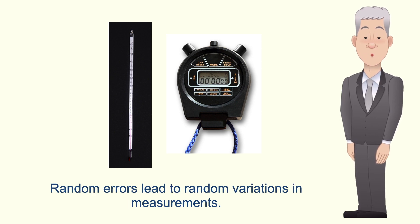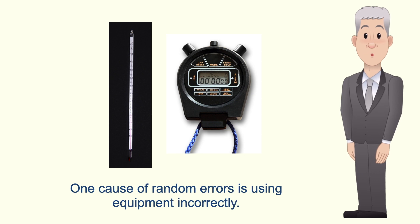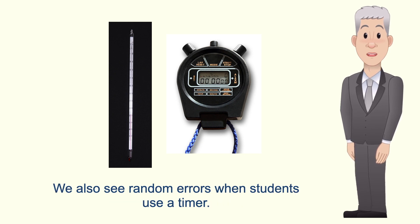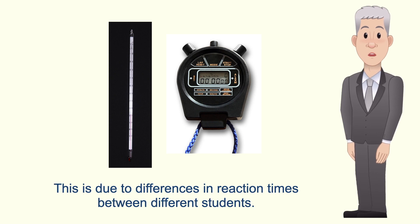Random errors lead to random variations in measurements and one cause of random errors is using equipment incorrectly. A good example is not reading a thermometer accurately. We also see random errors when students use a timer. This is due to differences in reaction times between different students.